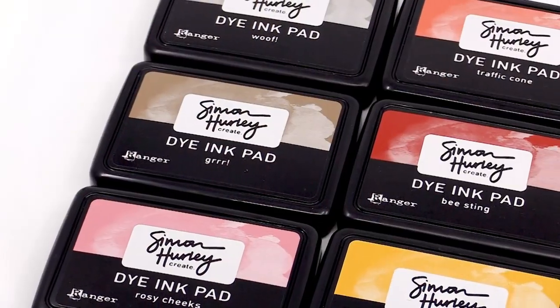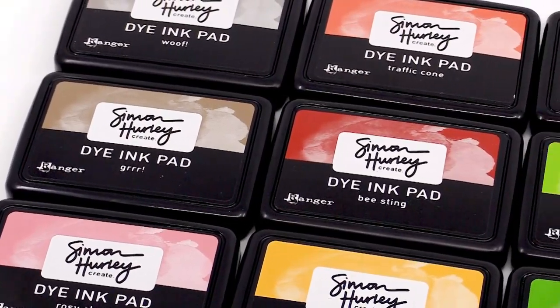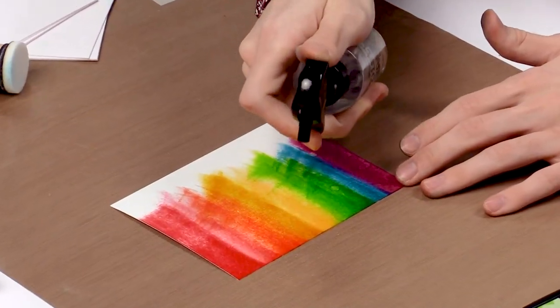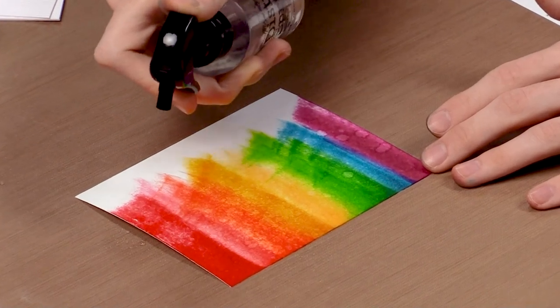Hi there, I'm Simon Hurley, Ranger's newest signature designer, and I'm here at Scrapbook.com sharing some really fun ideas using my new Simon Hurley Create product line. In this lesson, I'm going to share how to use my inks to do ink-smooshed backgrounds that are really fun and colorful, and also use my ink to create some water-colored images. So let's get started.